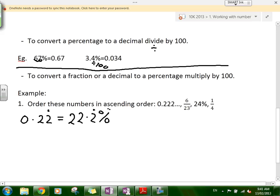That's the first one. 6 over 23 - can somebody multiply 6 over 23 by 100? That would be 26 and 2 over 23 percent.